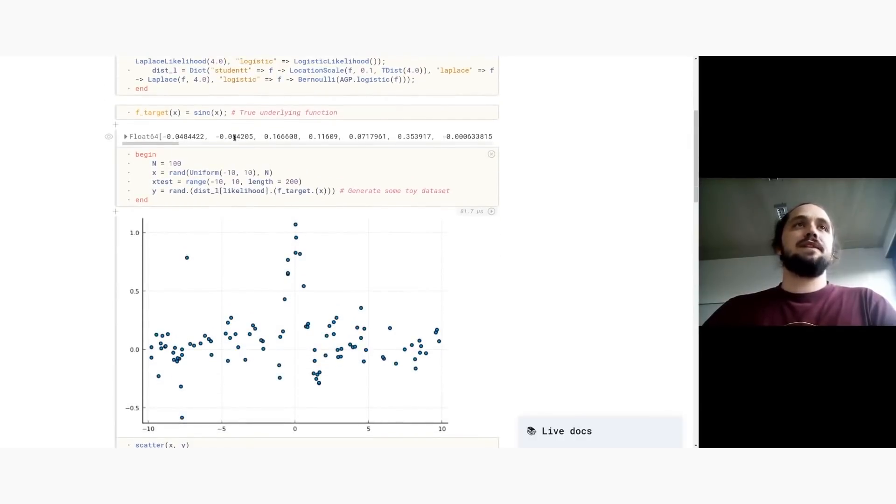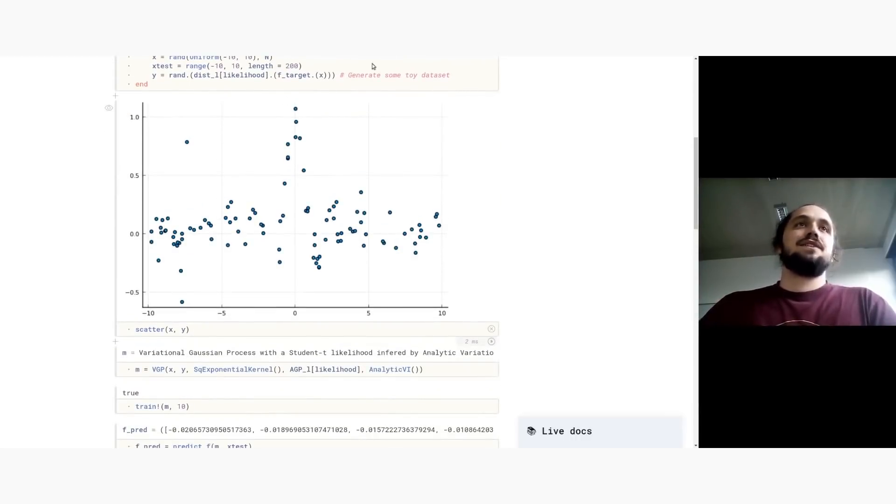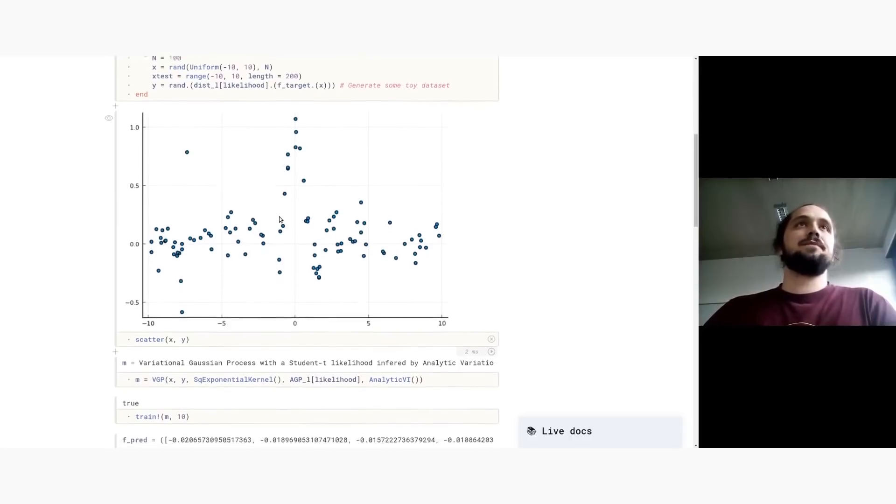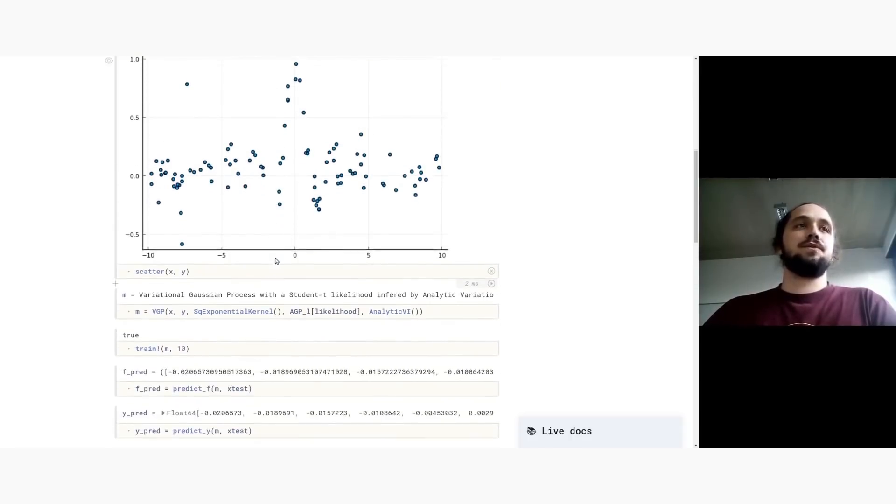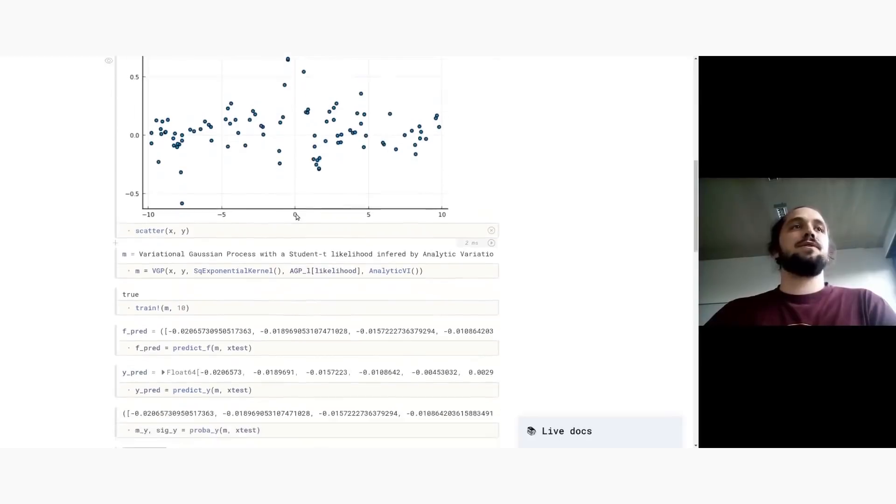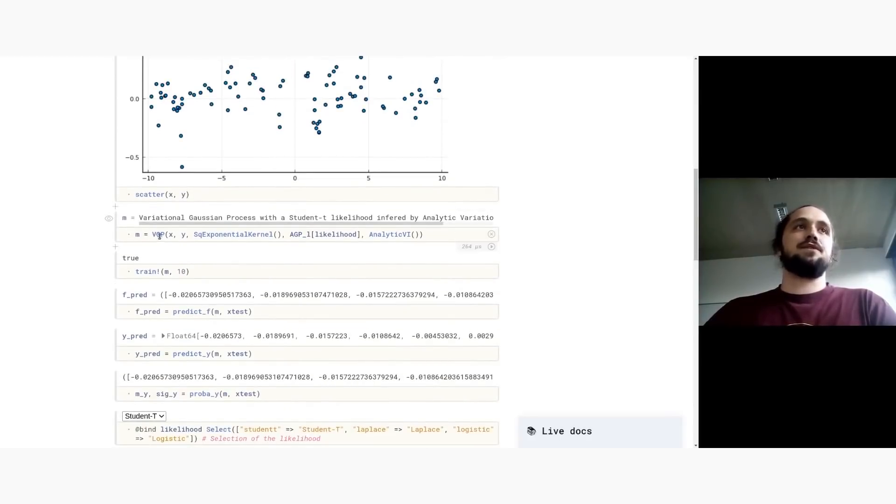I'm making a big list of different likelihoods. And I'm creating some data with my favorite toy function, not the sinc. So here's my data. You see that it's very noisy. And I use the Student-t likelihood for simulating the noise.